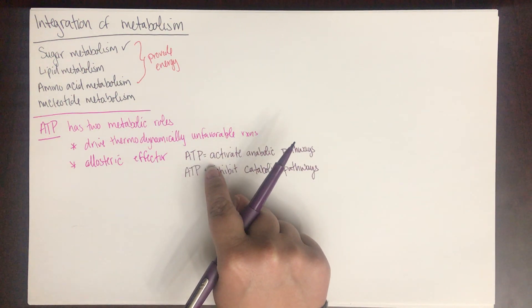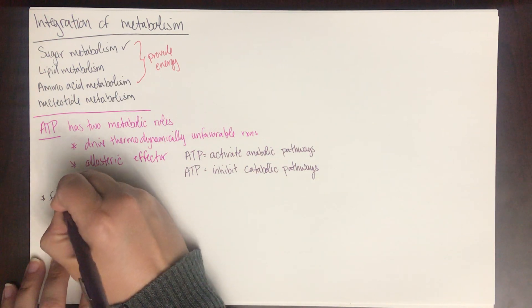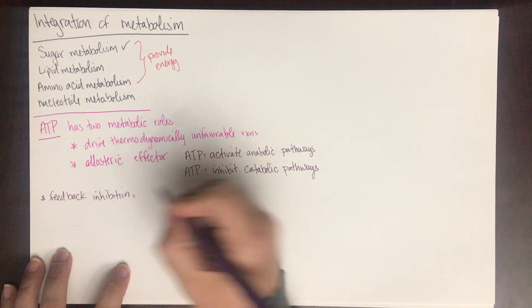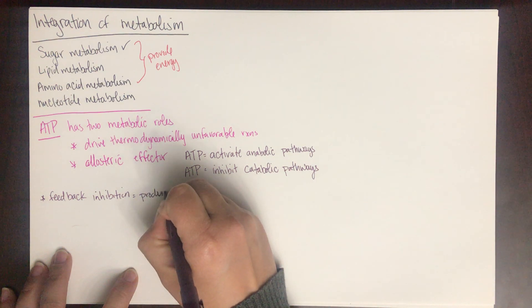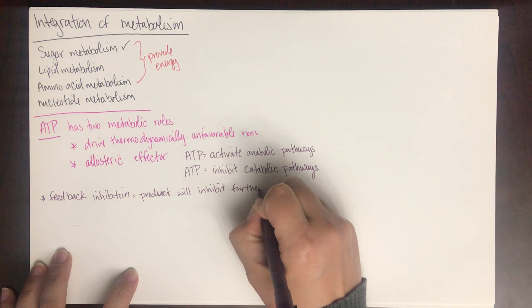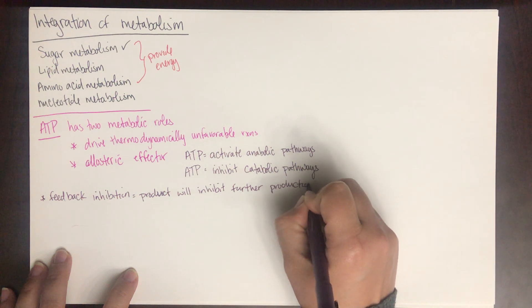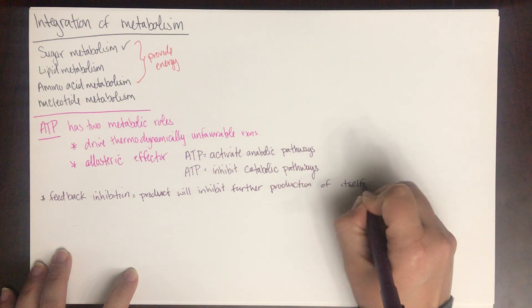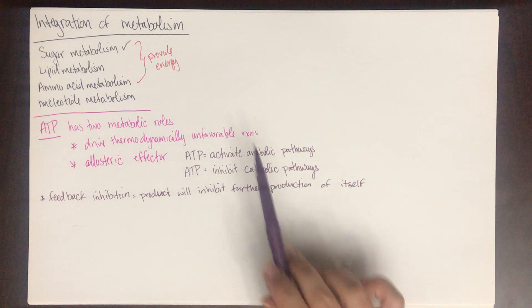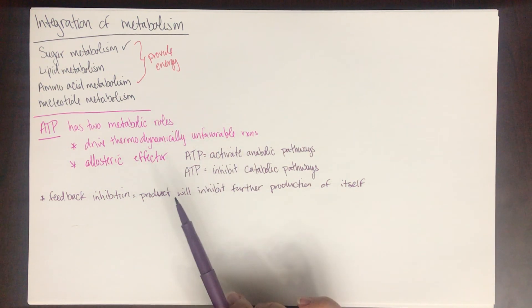This is an example of feedback inhibition, where the product inhibits further production of itself. If you're in a pathway that is producing ATP, once enough ATP has been made, that ATP becomes an allosteric effector of some of the enzymes in that pathway. This prevents unnecessary pathways from being active all of the time.